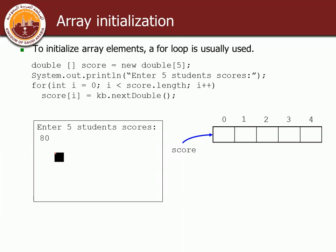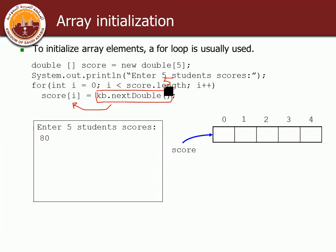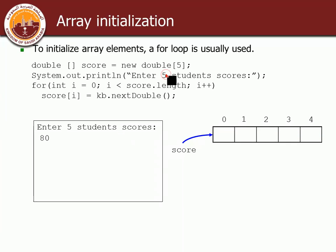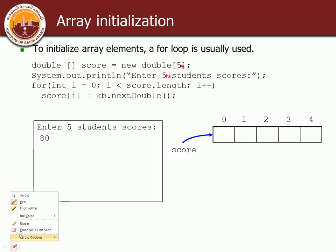Here we declare score as double[5], then use a for loop to ask the user for five numbers. The first time i=0, the second time i=1, up to i=4, storing input into score[i]. If the user types 80 first, it goes into score[0]. What if you need 500 elements? Just change 5 to 500 — that's it. The loop repeats 500 times from 0 to 499.